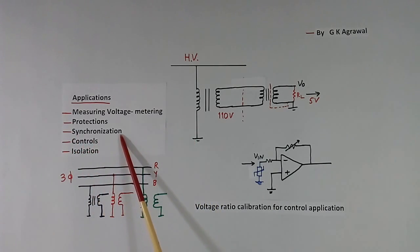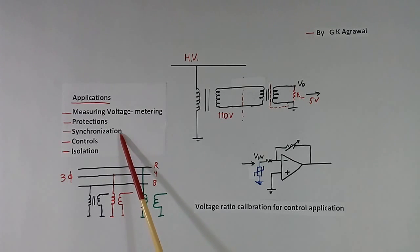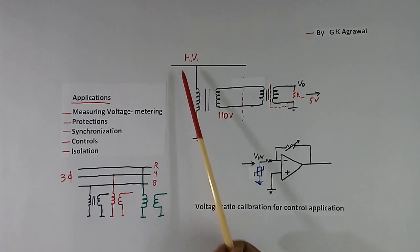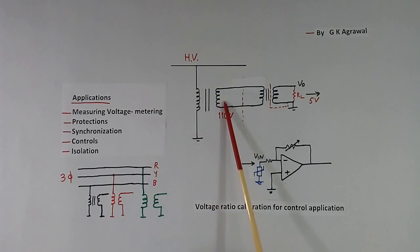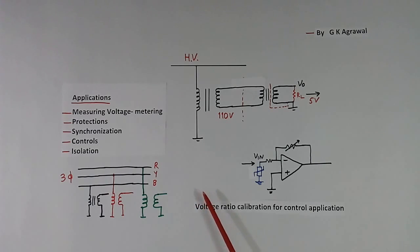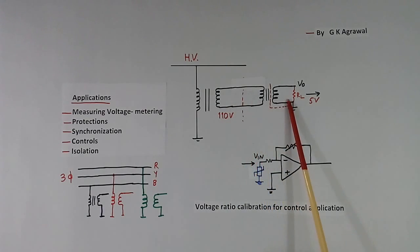Now synchronization — when we use a thyristor, we have to give a synchronized gate pulse with respect to the incoming voltage, or wherever the thyristor is connected. For that, PT is used. Then for controls — we may have closed-loop control of some parameter — for that purpose also PTs are used.